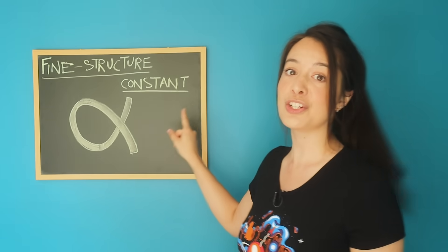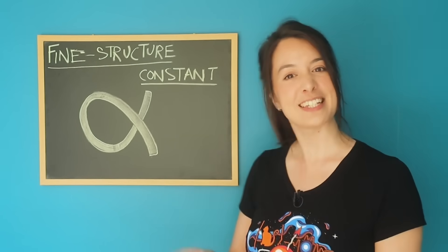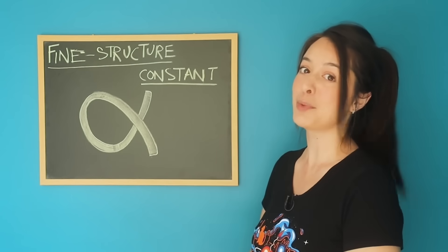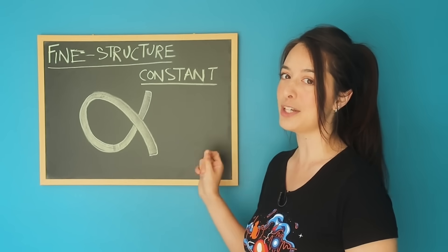Take this one, the fine structure constant. It's not as famous as some of its constant cousins like the speed of light, but it's a favourite among scientists. Richard Feynman once said, all good theoretical physicists put this number up on their wall and worry about it.